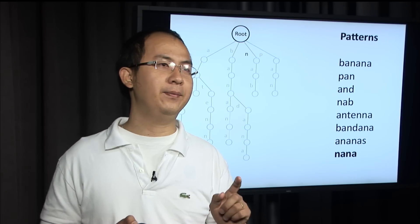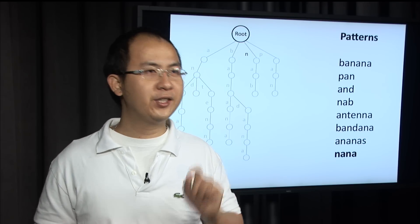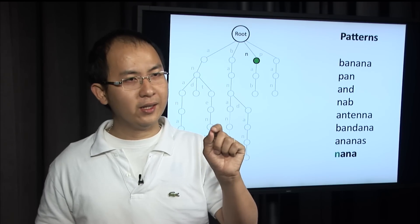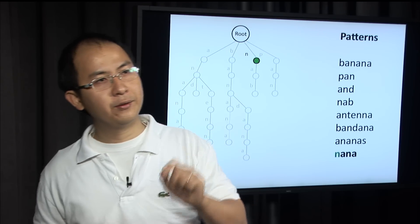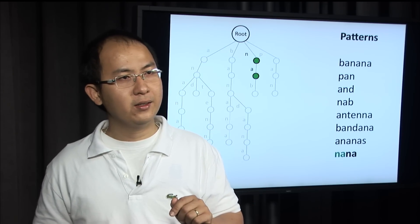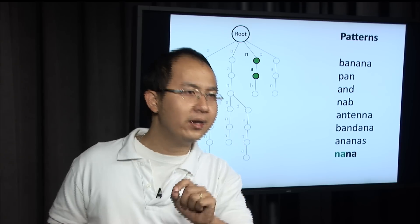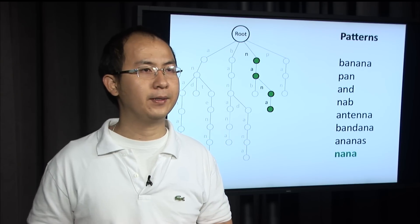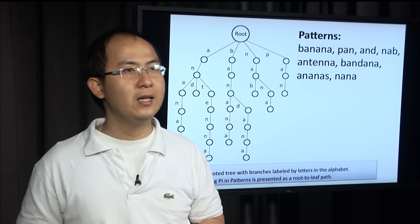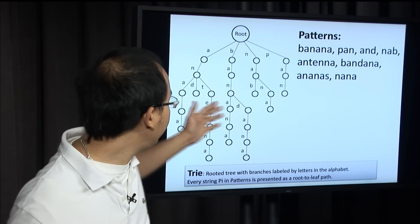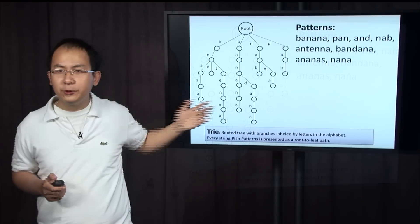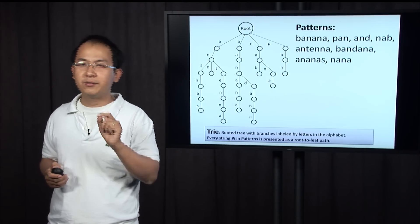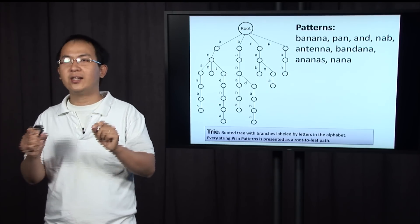The next pattern is nana. We start from the root — sorry, nana — we go through A, N, A. There's no N next, so we create a new one, then A. So this rooted tree is called a trie, constructed from the set of patterns. A trie is a rooted tree with branches labeled by letters in the alphabet, and every pattern is a path from the root to a leaf.